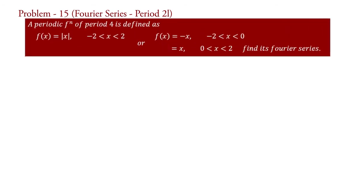The problem is: a periodic function of period 4 is defined as f(x) = |x| for −2 < x < 2, or equivalently f(x) = −x for −2 < x < 0 and f(x) = x for 0 < x < 2. Find its Fourier series.